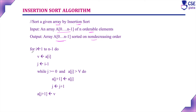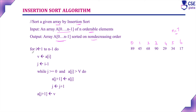This is the outer for loop: for i equal to 1 to n minus 1. For example, if we consider indices 0, 1, 2, 3, 4, 5, 6 — that is array A of 0 to A of 6, totaling 7 elements — n is equal to 7. So for i equal to 1 to n minus 1, that is 1 to 6.